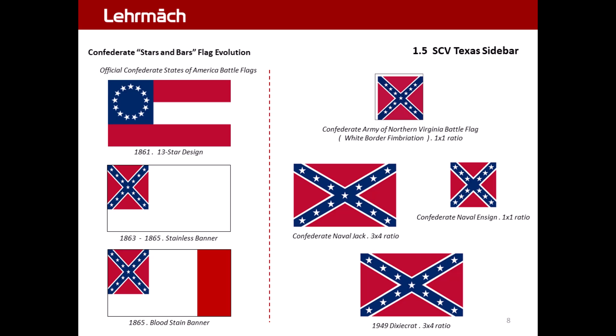As stated beforehand, the Confederate States of America utilized a variety of national flag standards, supplemented by each Confederate Army, Division, and Regiment to hoist its own unique flag design. On the left side of the presentation are the three official Confederate States of America battle flags. These flags represented the entire national entity during battle engagements, and hence are Confederate battle flags in the literal sense of the word.